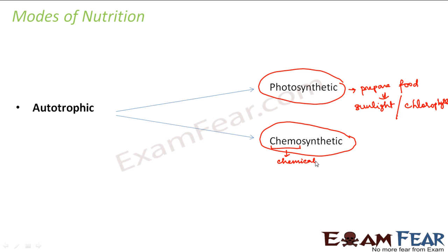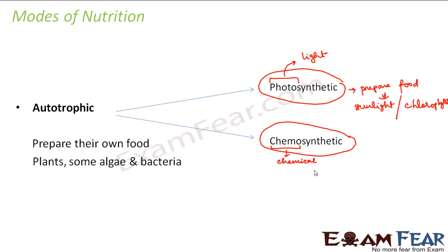Chemosynthetic organisms use chemical energy, released during oxidation of organic compounds, to prepare their food. Photosynthetic organisms use light energy, while chemosynthetic organisms use chemical energy. Examples of autotrophic organisms include plants, some algae, and bacteria. Plants are photosynthetic, while certain bacteria — such as sulfur bacteria and Nitrosomonas, commonly found in soil — are chemosynthetic.